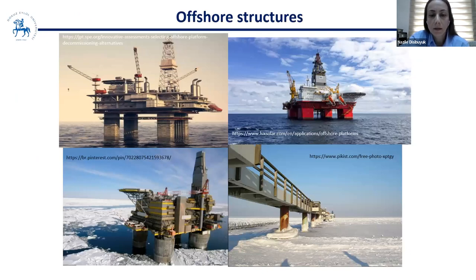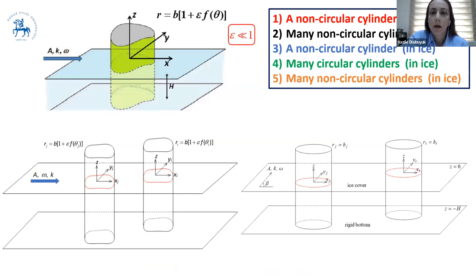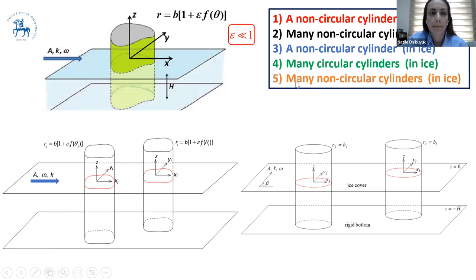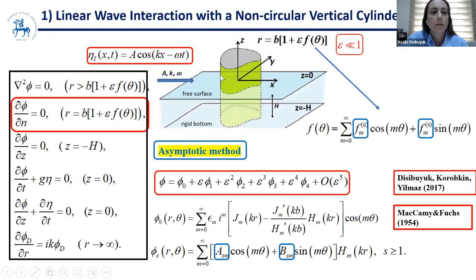These cylinders can be considered as legs of an offshore platform used for exploration of oil and gas from under the seabed. I have five problems to discuss. I will start with the problem of wave diffraction from cylinders with no ice, as in problems one and two, and then ice cover will be included in problems three to five.